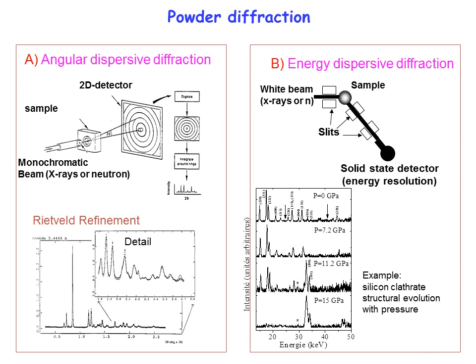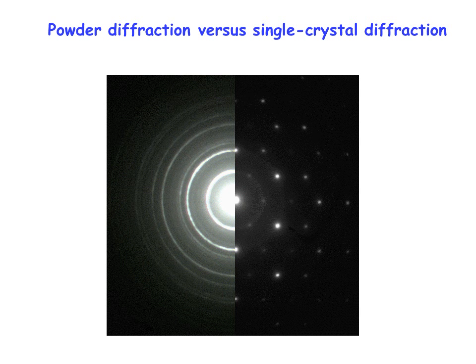Another method is energy dispersive diffraction. Instead of exploring reciprocal space by looking at diffracted angles with a monochromatic beam, you look at which energies are diffracted at a given direction, and for this you need a white beam of X-rays or neutrons. An example is shown at the right: the evolution of a diffraction pattern with applied pressure in silicon clathrate. To recall the distinction: powder diffraction gives Debye-Scherrer rings, while single crystal diffraction gives discrete spots.